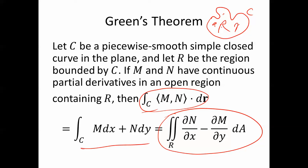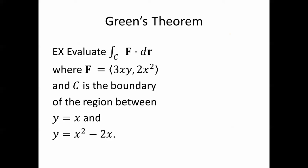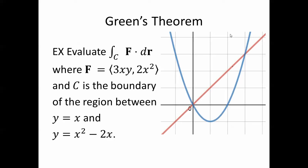So let's evaluate this line integral, the line integral of f along c, where f equals 3xy, 2x squared, and c is the boundary of the region between y equals x and y equals x squared minus 2x. Here's what that region looks like.